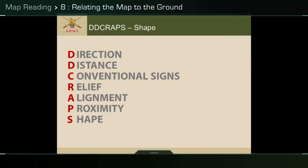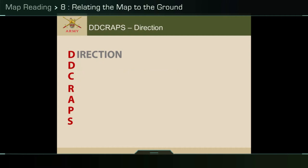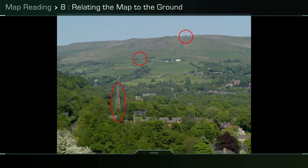To remember the principles used to relate the map to the ground, the army uses the mnemonic DD CRAPS. When the map is correctly orientated, the direction on the ground will match the direction on the map. This is shown by seeing a church spire and monument circled in red, which are also shown on the map circled with arrows from the thick red line denoting the location you are viewing them from.